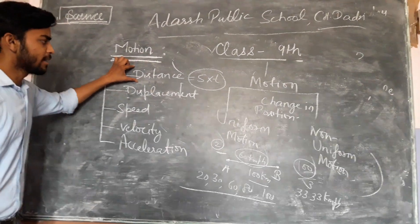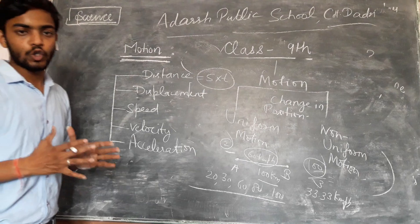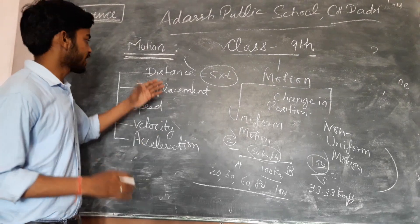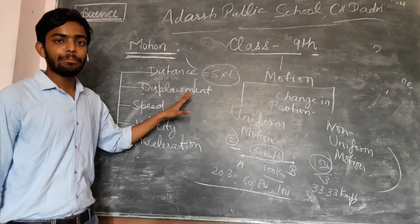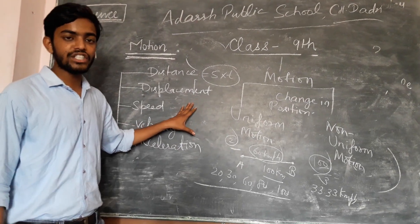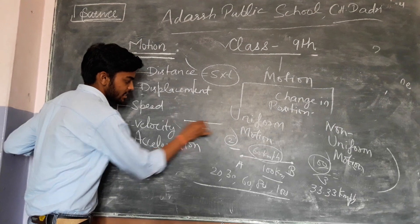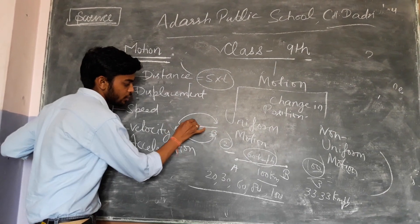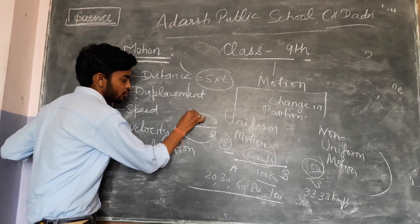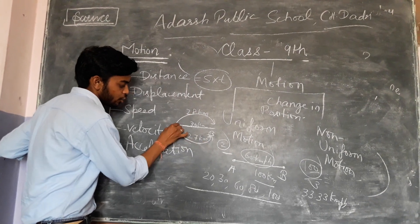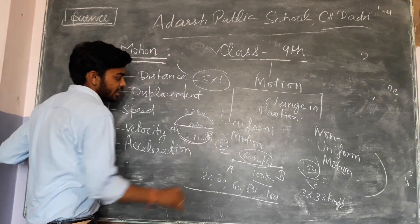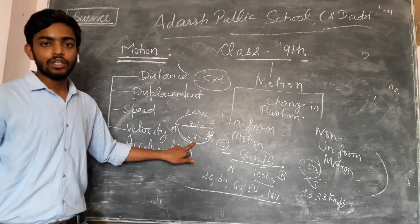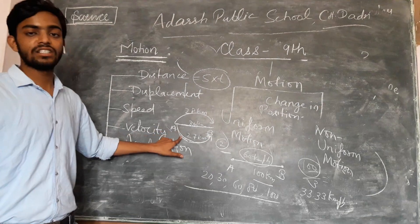Distance is a scalar quantity. Scalar quantities are those physical quantities which have only magnitude. Now, displacement — here the path taken is not considered, only the initial and final position matters. If we have points A to B, we consider the shortest path. For example, if the distance via road is 30 km but the shortest path from A to B is 27 km, then the displacement is 27 km.